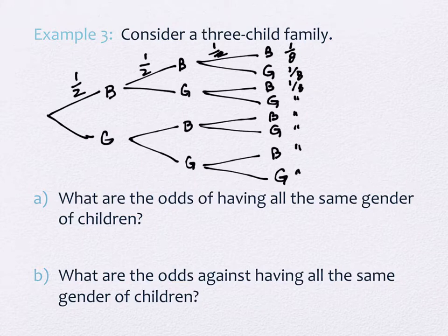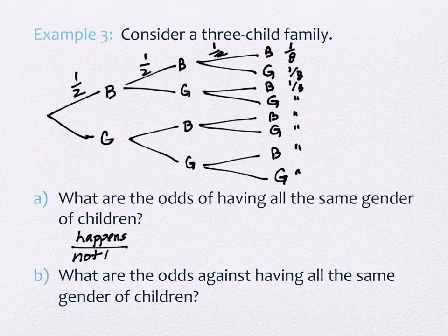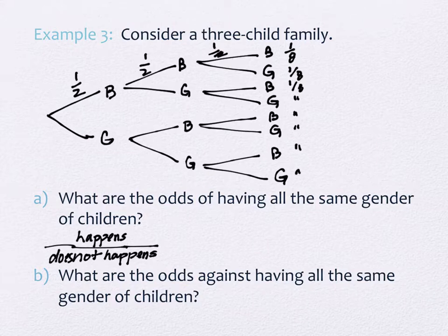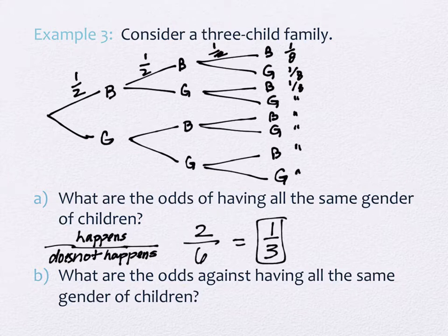And how many ways are there that you don't get all the same gender of children? Six, because there were eight total. So as we're looking at that, this is a comparison of it happens compared to it not happening. You said two ways it happens, six ways it doesn't happen, and we would reduce that to one over three.